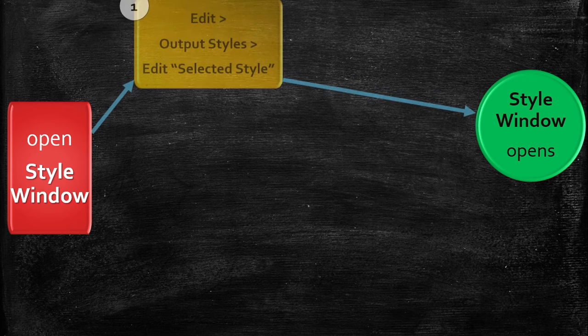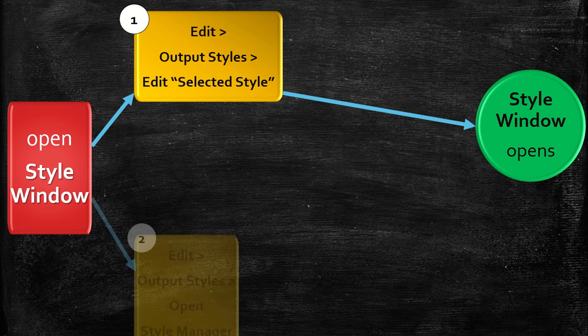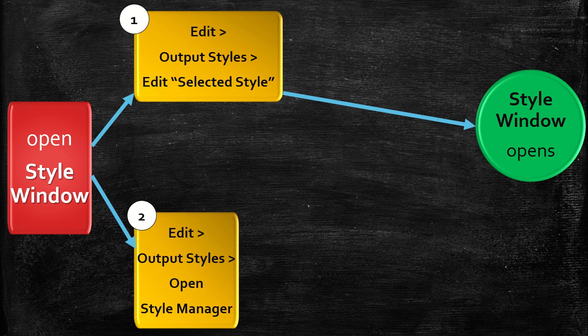The style window can be accessed by two ways. In the first approach, click the Edit menu, click Output Styles, and then click Edit Style. The style window opens.